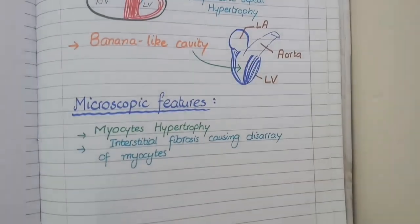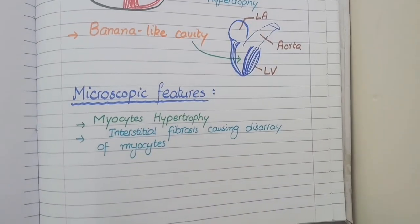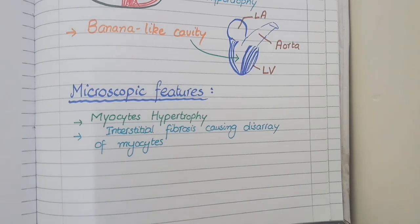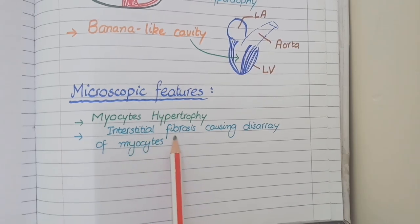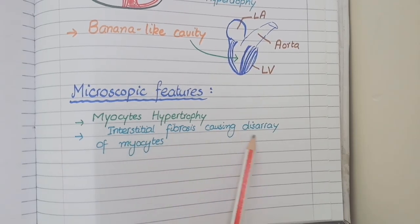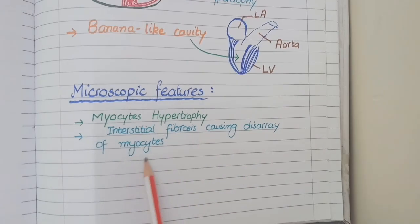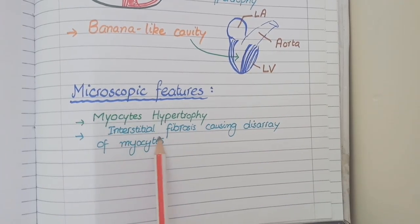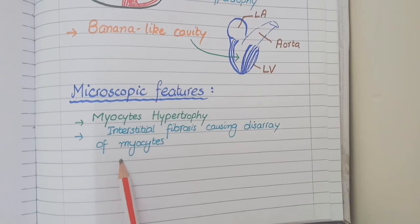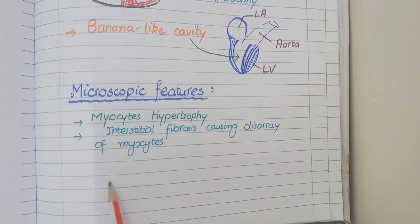On microscopic view of hypertrophic cardiomyopathy, you will see hypertrophy of myocytes with increased size and enlarged hyperchromatic nuclei. Along with this, you will also see interstitial fibrosis that causes disarray or disarrangement of myocytes. So you see myocyte hypertrophy and interstitial fibrosis causing disarray of myocytes.